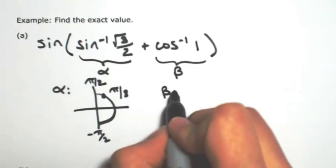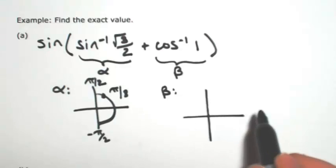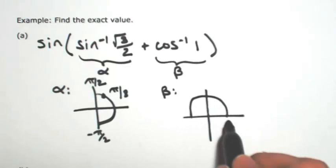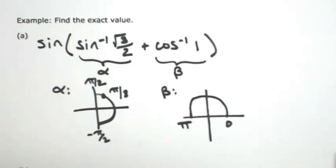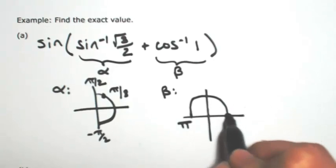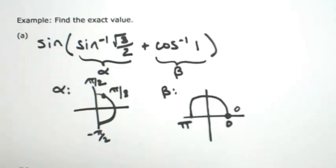So then for beta, I'm talking about inverse cosine, so that's only the first and second quadrant, so from 0 to pi. I'm looking for the angle where the x-coordinate is 1, which is at the angle 0.